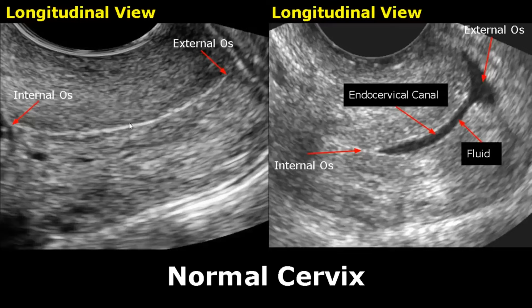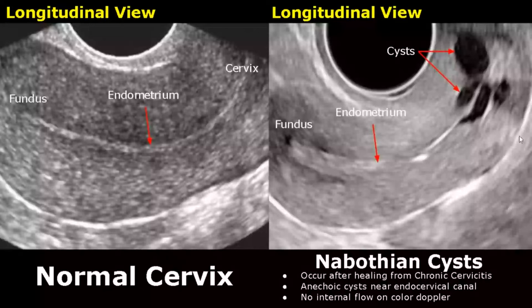The internal os is the junction between the body of the uterus and the cervix — it is the upper part of the cervix and will be seen on the left side in the image. The external os is the junction between the cervix and the vagina, seen on the right side. The area between the internal os and external os is the endocervical canal. In this image we can see some fluid in the endocervical canal.